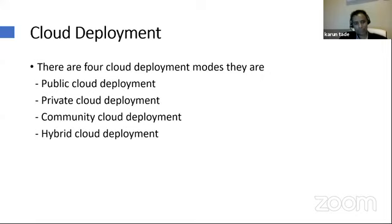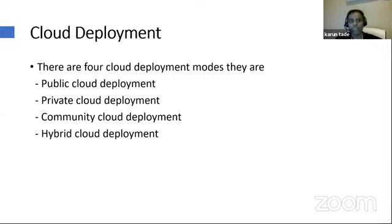I've been mentioning these words — public cloud, private cloud, community cloud, and hybrid cloud. Now we'll quickly look into these aspects. How do we do a deployment? That will be talked about in detail in day five, but I'll quickly walk through what public, private, community, and hybrid clouds are and what the deployment process involves.